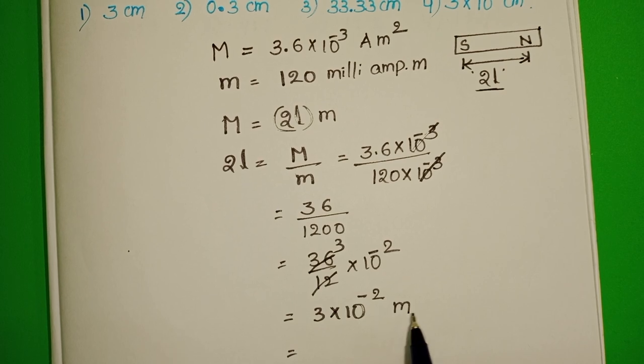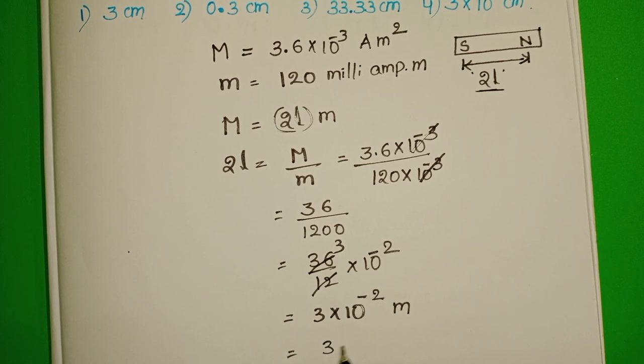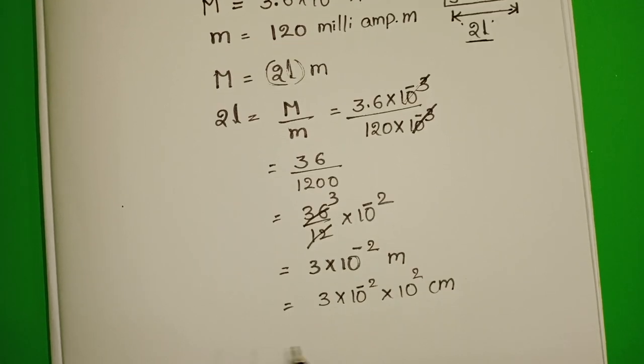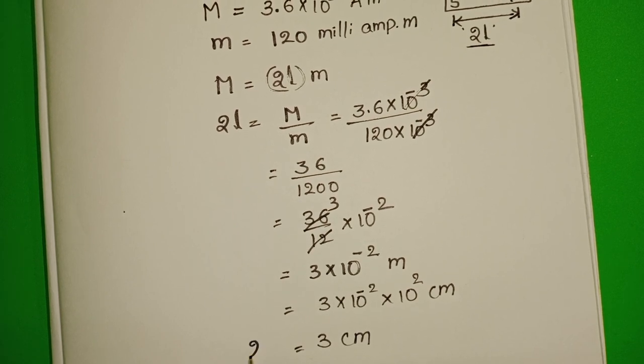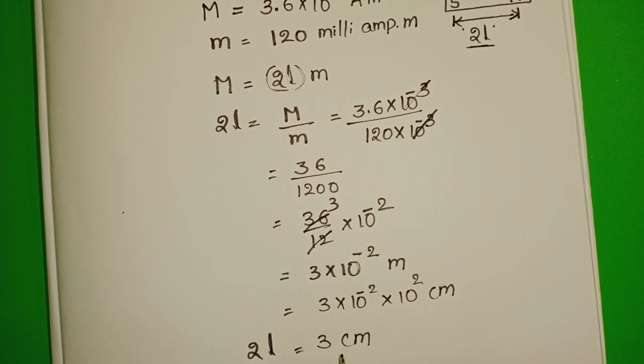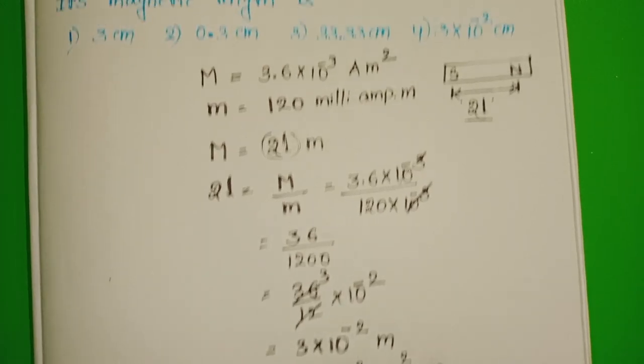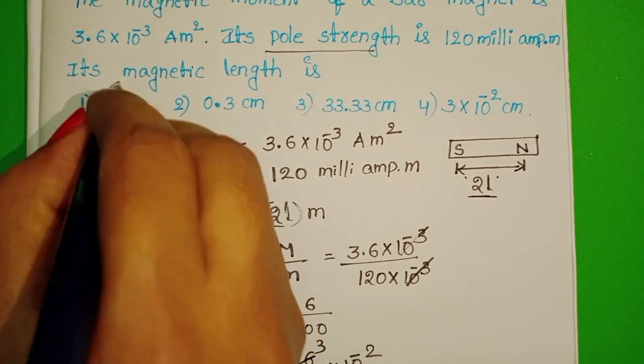We know 1 meter equals 10² centimeters. 3 centimeters. So magnetic length equals 3 centimeters. First option is correct.